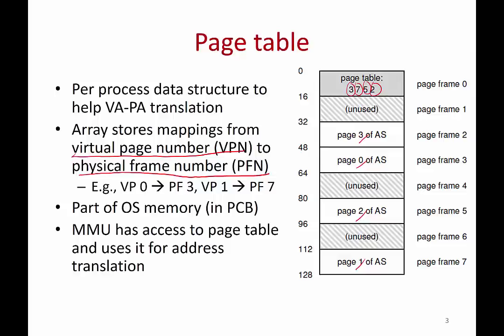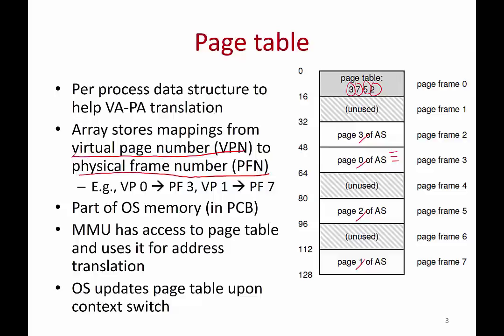The MMU hardware has access to this page table, so that any time the CPU accesses some piece of code or data in page 0, the MMU uses this page table to determine it has to go to physical frame number 3 to get that code or data. Note that this page table is a per-process data structure, so every time you switch from one process to another, the operating system updates the page table information given to the MMU.